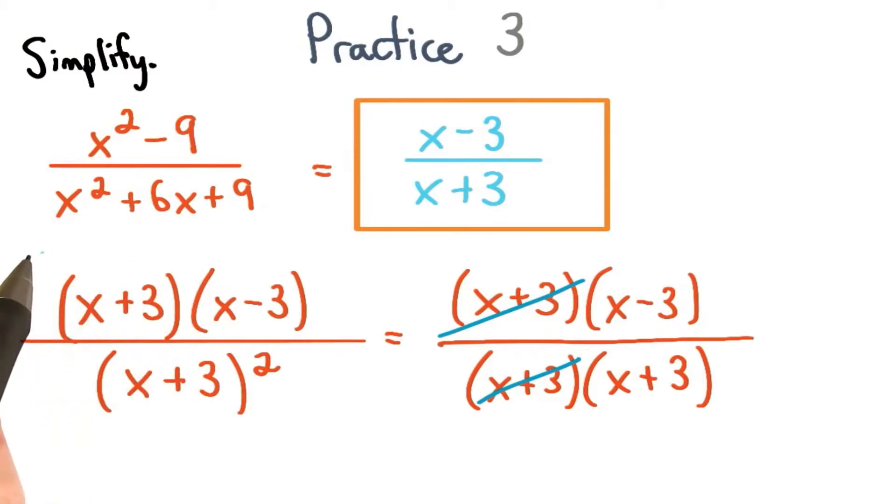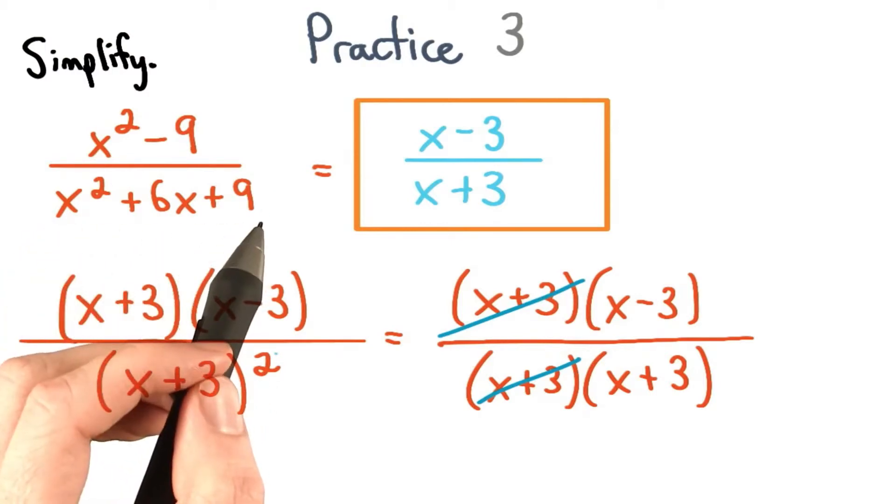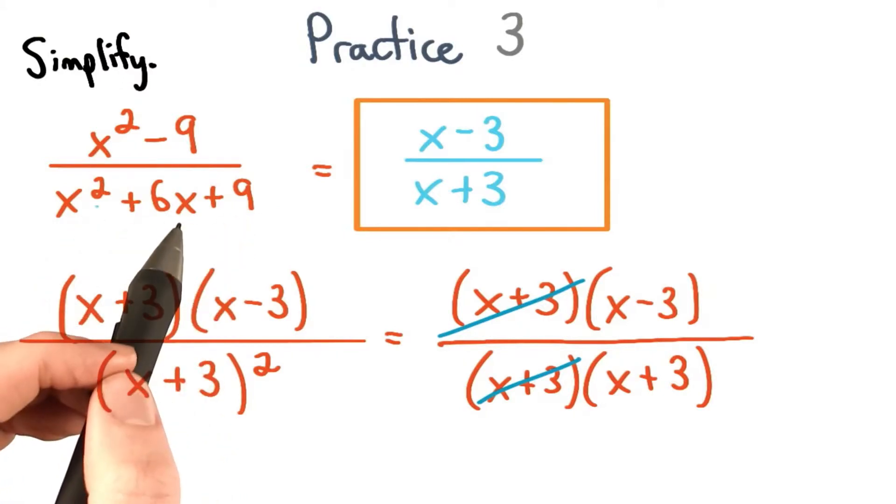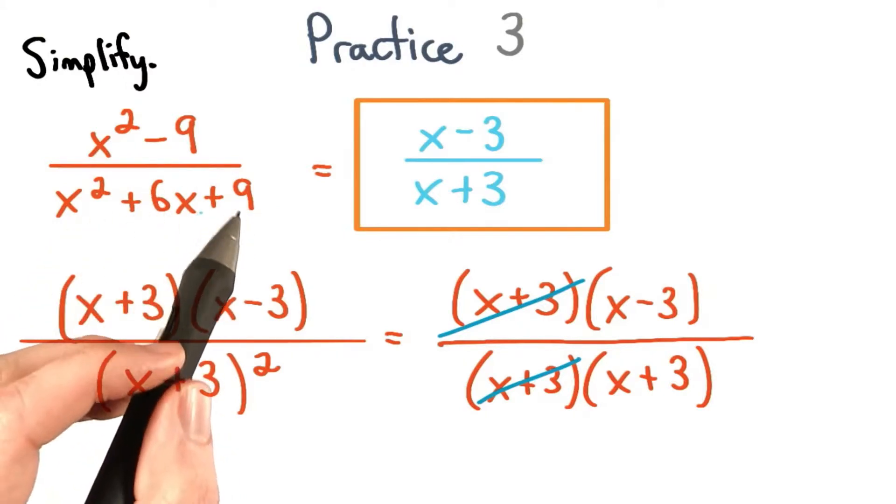Our denominator factors into x plus 3 squared. This is a perfect square trinomial. The first term is a square, the second term is a square, and the middle term is twice the square root of the first term and the last term.